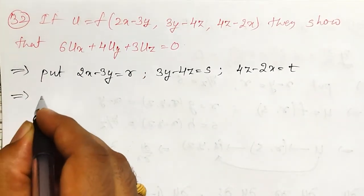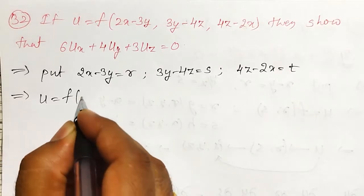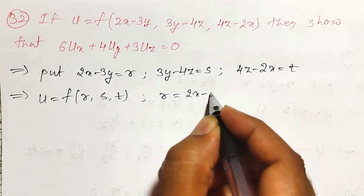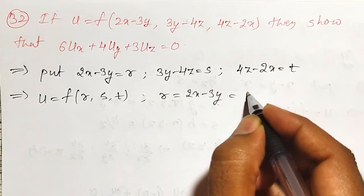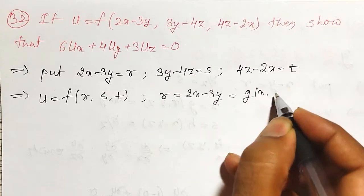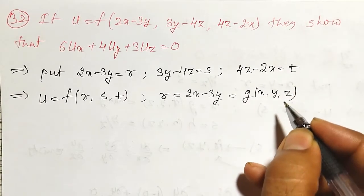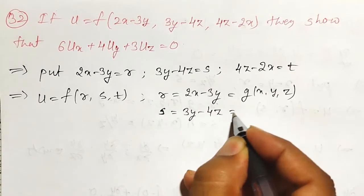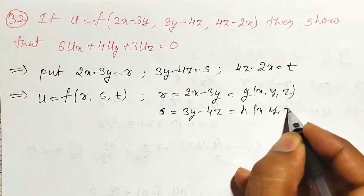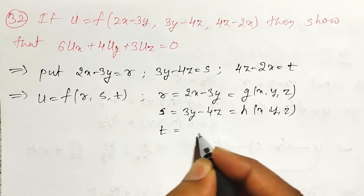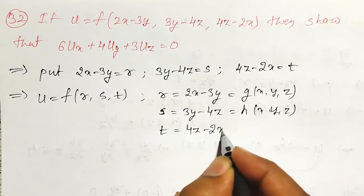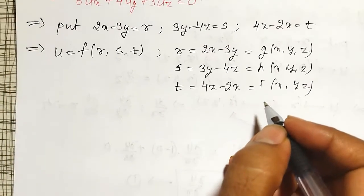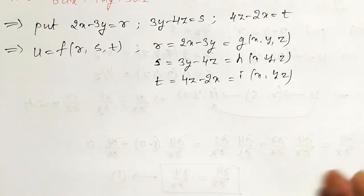Then the given function will reduce to u equal to f(r, s, t), where r is equal to 2x minus 3y and it is a function of x, y, z. Similarly, s is 3y minus 4z — it is also a function of x, y, and z. And t is nothing but 4z minus 2x — it is also a function of x, y, z, all three variables. Therefore, I have converted the given function into composite function type.